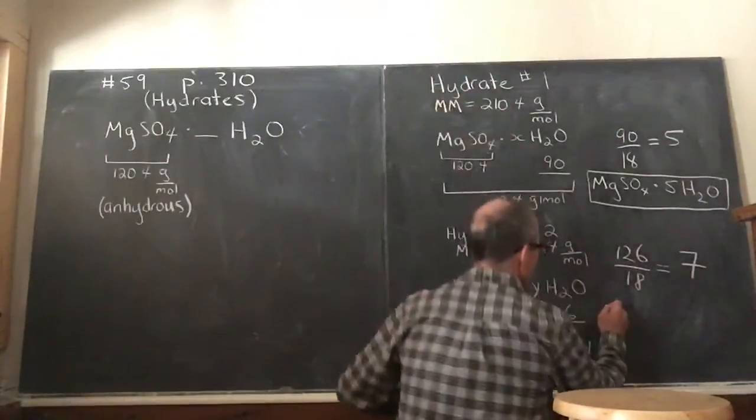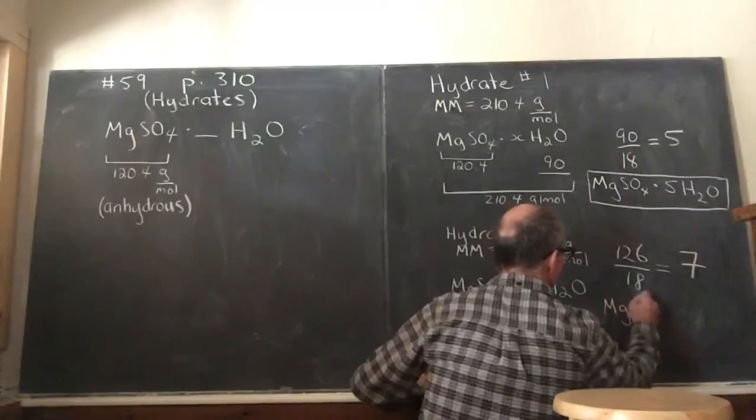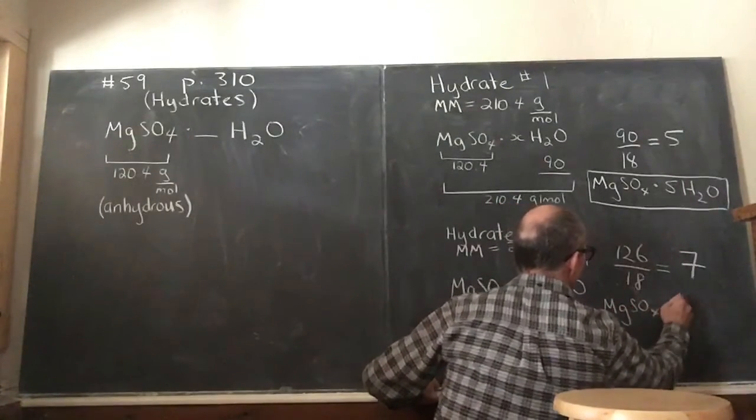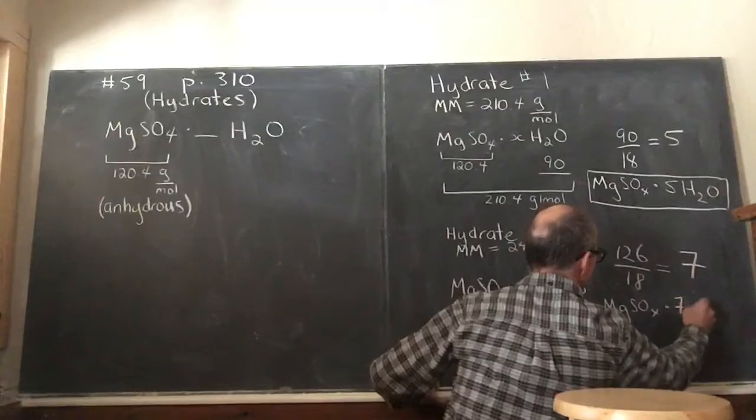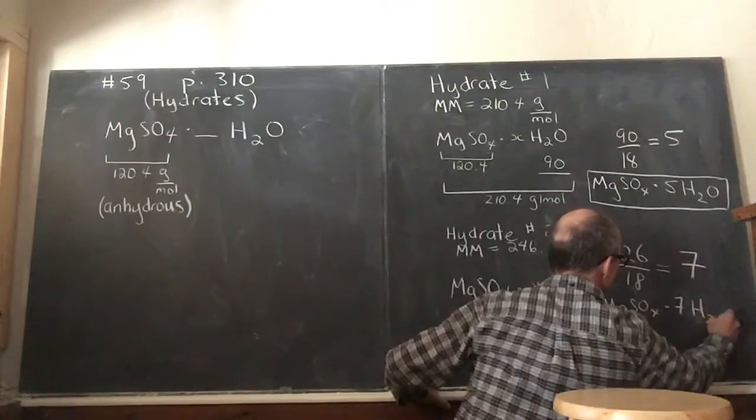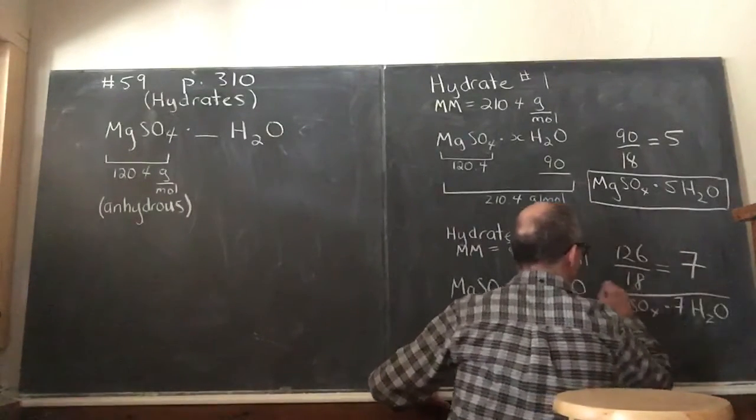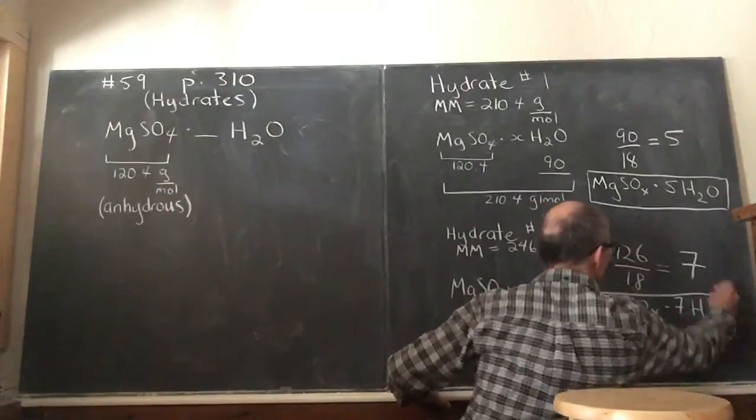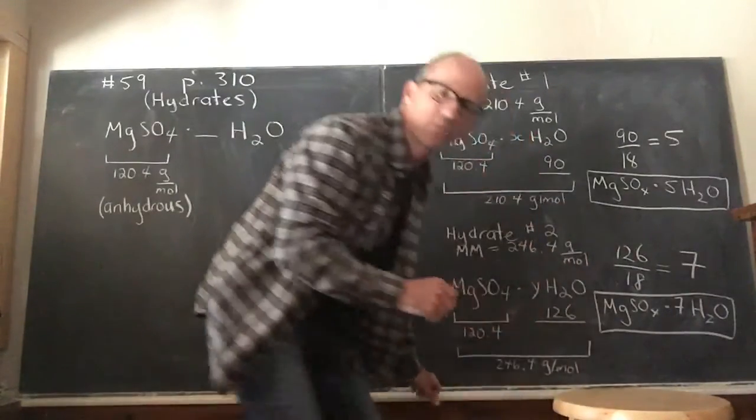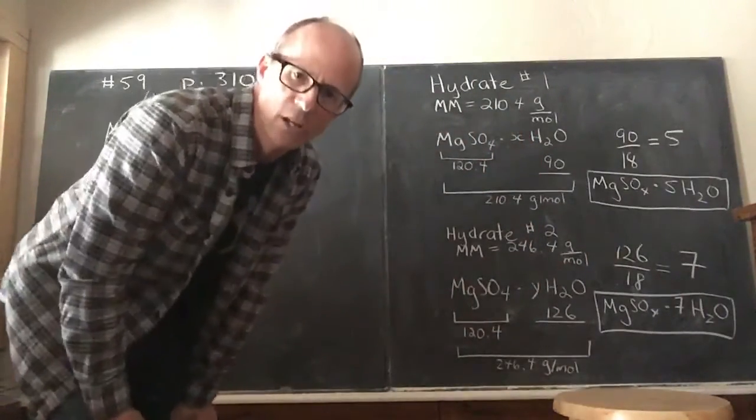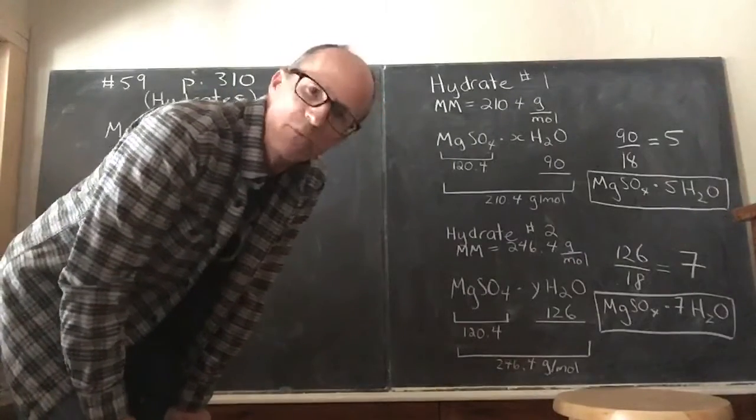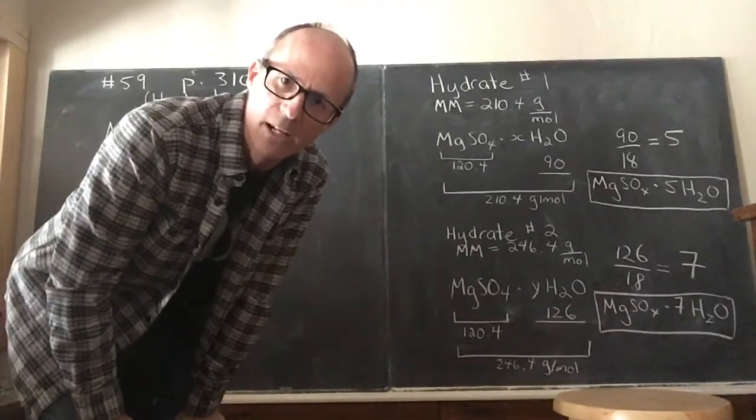So at the end of the day, the second hydrate that we're looking at here in this question ends up being MgSO4·7H2O. And if you remember, this is the Epsom salts—not that you have to know that for this question, but Epsom salts is magnesium sulfate heptahydrate.